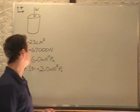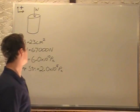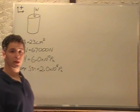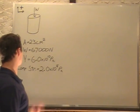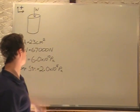In this problem we have a column that has a weight pushing down on it. We're told this column has an area of 23 square centimeters. It has a weight pushing down on it of 67,000 newtons.